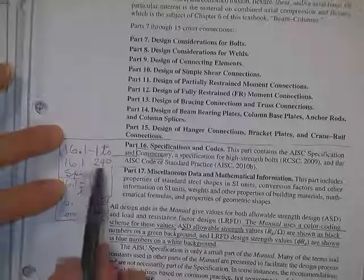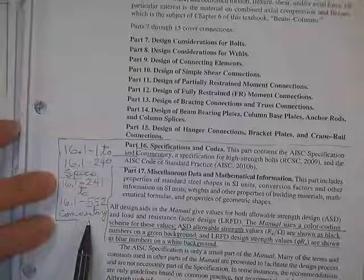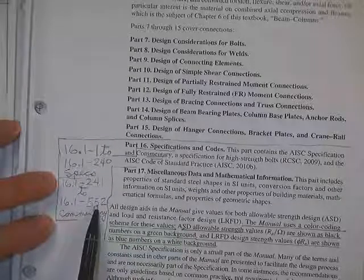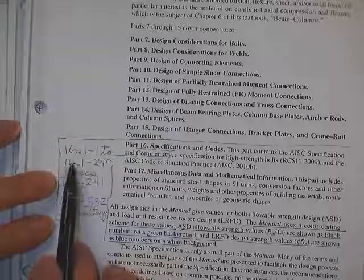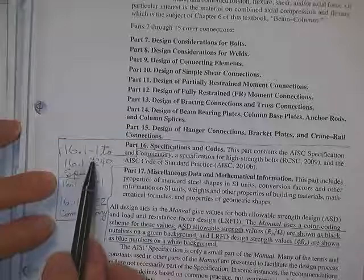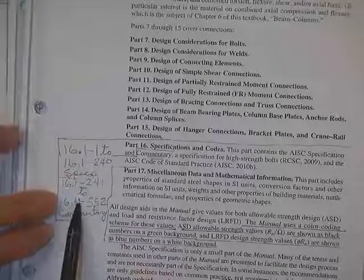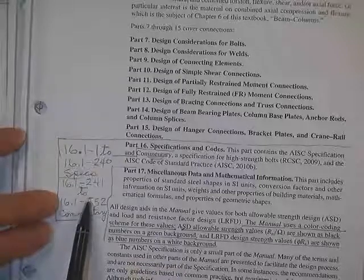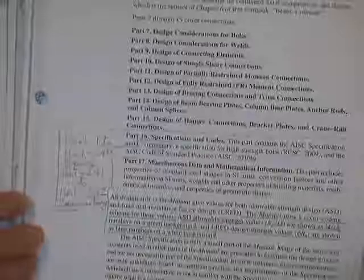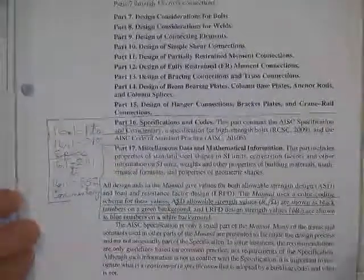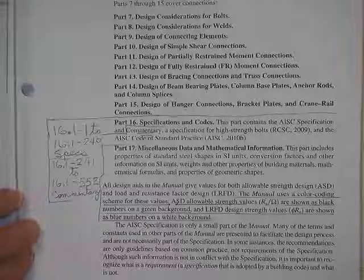In the specs, you have the main specifications. At the tail end, there are some appendices. In the commentary, they'll have the same numbering system. So if you want to find out something about information on page 16.1-36, there's a corresponding page back in here that gives you comments on that material. It's usually very helpful.